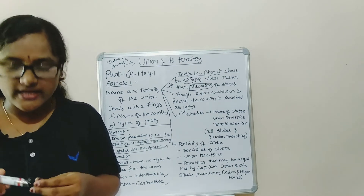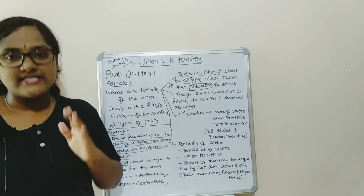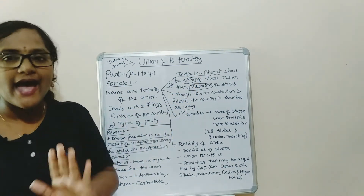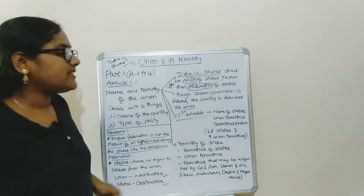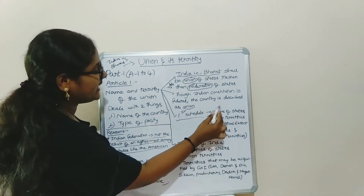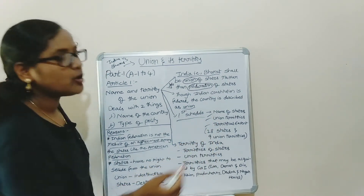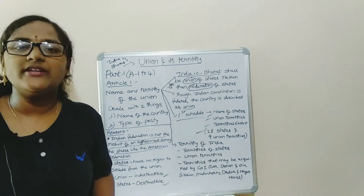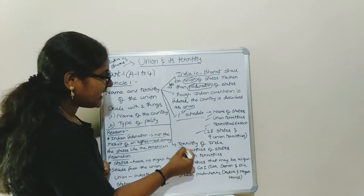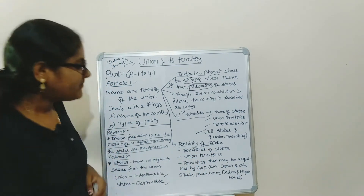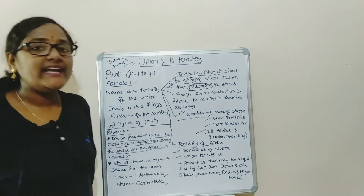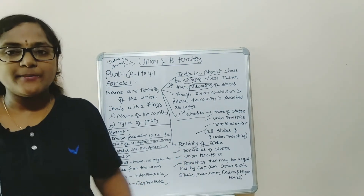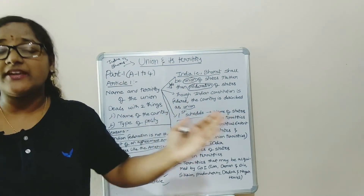So the Indian Constitution has chosen the words 'union of states.' Article 1 has three parts. The second part says the First Schedule contains the names of states, union territories, and their territorial extent — presently we have 28 states and 9 union territories. The third part says the territory of India comprises the territory of states, union territories, and territories that may be acquired by the Government of India — that is, territory acquired from a foreign country.